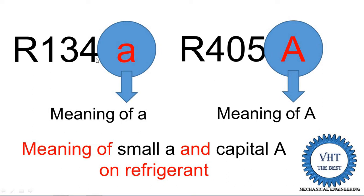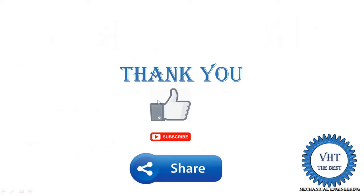To repeat: small 'a' indicates isomer refrigerants, meaning the chemical structure is different and therefore the property is different. Capital 'A' indicates it is an azeotrope refrigerant, meaning it is made by mixing two or more refrigerants. Thank you for watching this video — if you learned something, please like, subscribe, and share with friends.